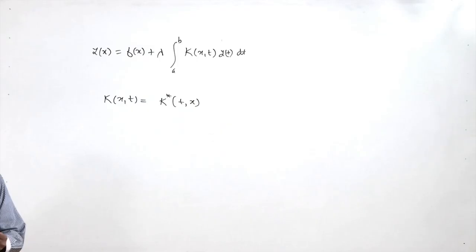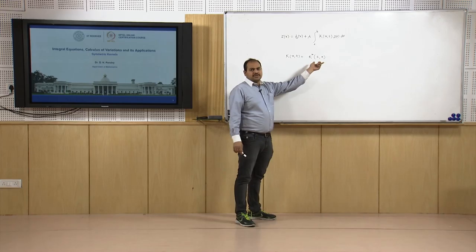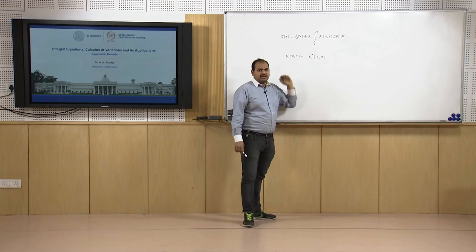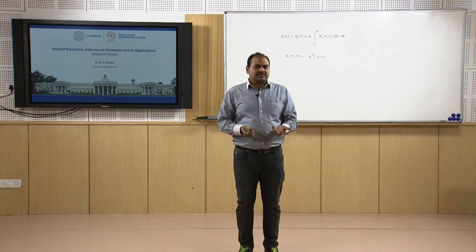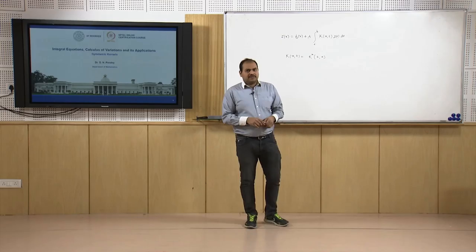We say that k*(t,x) is the complex conjugate of k(t,x). So if these two are equal, we say that our kernel is symmetric, or we can say the kernel is complex symmetric, or that the kernel is of Hermitian type.